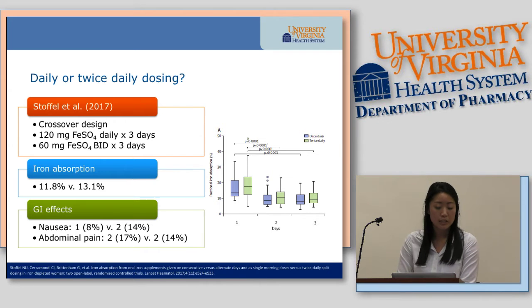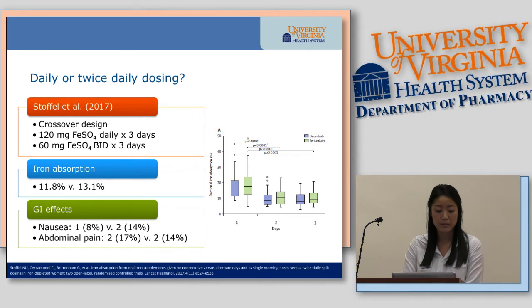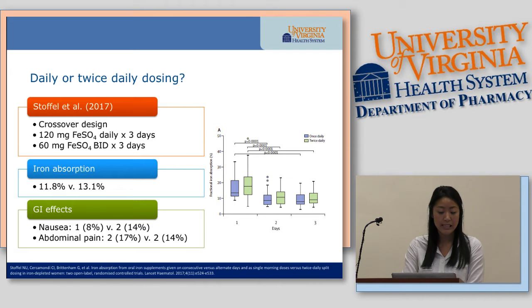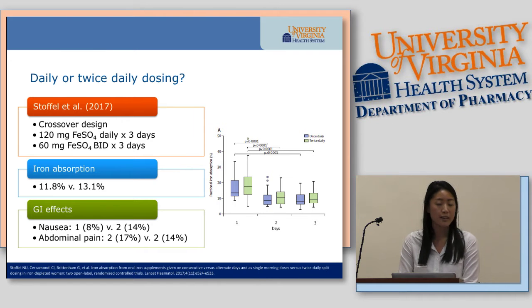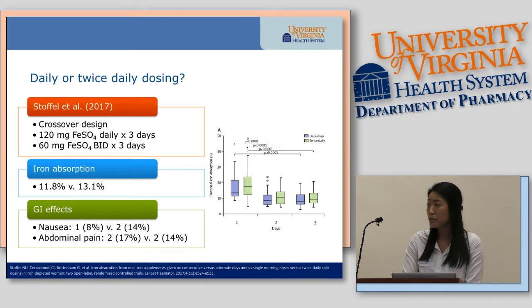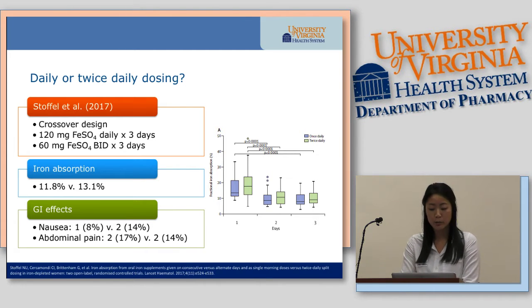The same group also looked at daily versus twice-daily dosing in a crossover design. Patients were given 120 mg of ferrous sulfate daily for three days, then after a 14-day washout, 60 mg twice daily for three days. They found no significant effect on iron absorption between the two regimens, and GI side effects were similar between groups. They concluded that the common practice of splitting an oral iron dose to increase absorption is unnecessary, and divided dosing does not significantly affect fractional or total iron absorption.